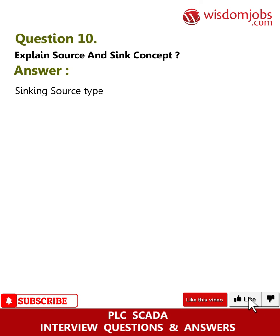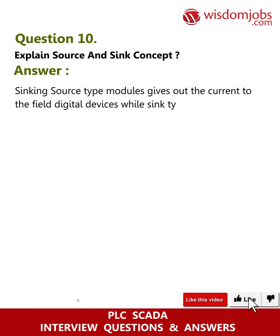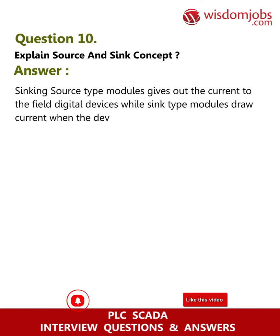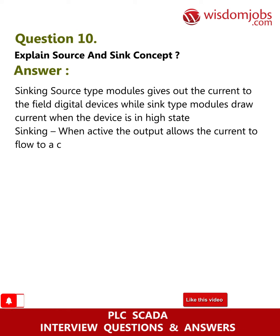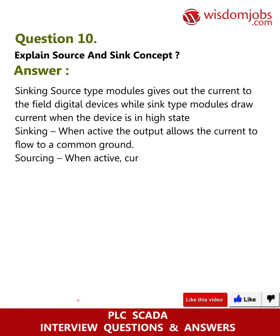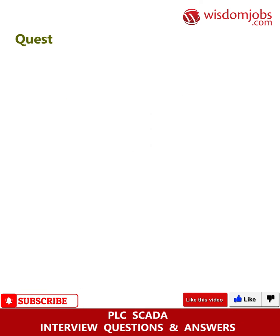Question 10: Explain the source and sink concept. Answer: Sourcing type modules give out current to the field digital devices, while sink type modules draw current when the device is in a high state. Sinking: when active, the output allows current to flow to a common ground. Sourcing: when active, current flows from a supply through the output device and to ground.